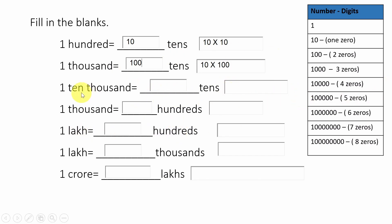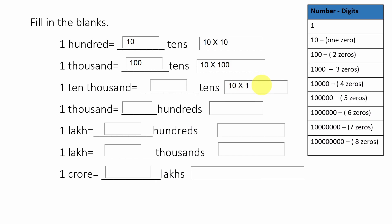Next: ten thousand equals how many tens? Ten thousand should be written as a product of tens — ten into what number? In ten thousand, how many zeros are there? Four zeros. We have already written one zero, so we need three more zeros. The answer is thousand tens.